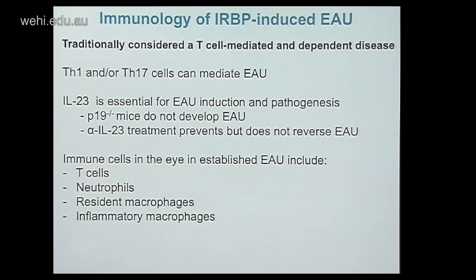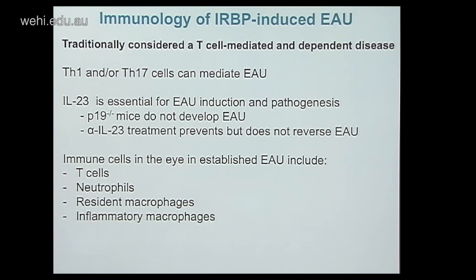Quite a lot is known about the immunology of IRBP-induced EAU, but the vast majority relates to T cells. It is traditionally considered a T cell-mediated and dependent disease. Th1 and/or Th17 cells can mediate EAU. IL-23 is essential for EAU induction — P19 knockout mice, a subunit of IL-23, do not develop EAU — and anti-IL-23 treatment prevents but does not reverse EAU. Immune cells seen within the eye in established EAU include T cells, neutrophils, resident macrophages, inflammatory macrophages, dendritic cells, and B cells.